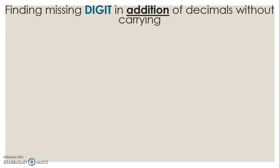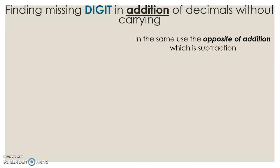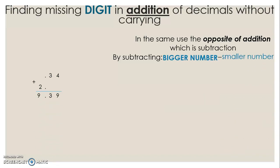Finding missing digit in addition of decimals without carrying. In the same way, use the opposite of addition, which is subtraction, by subtracting bigger number minus smaller number. I have two decimal numbers subtracted above each other. I want to find the missing digits. Pay attention — this addition of decimals is without carrying. I always start from the last digit. Here, 9 minus 4 gives us 5.